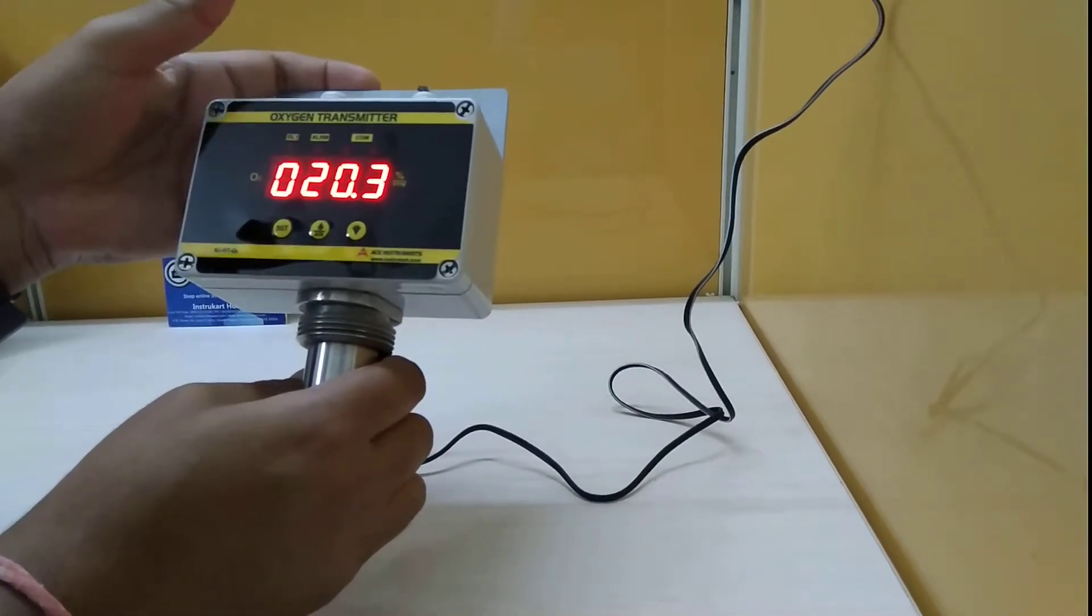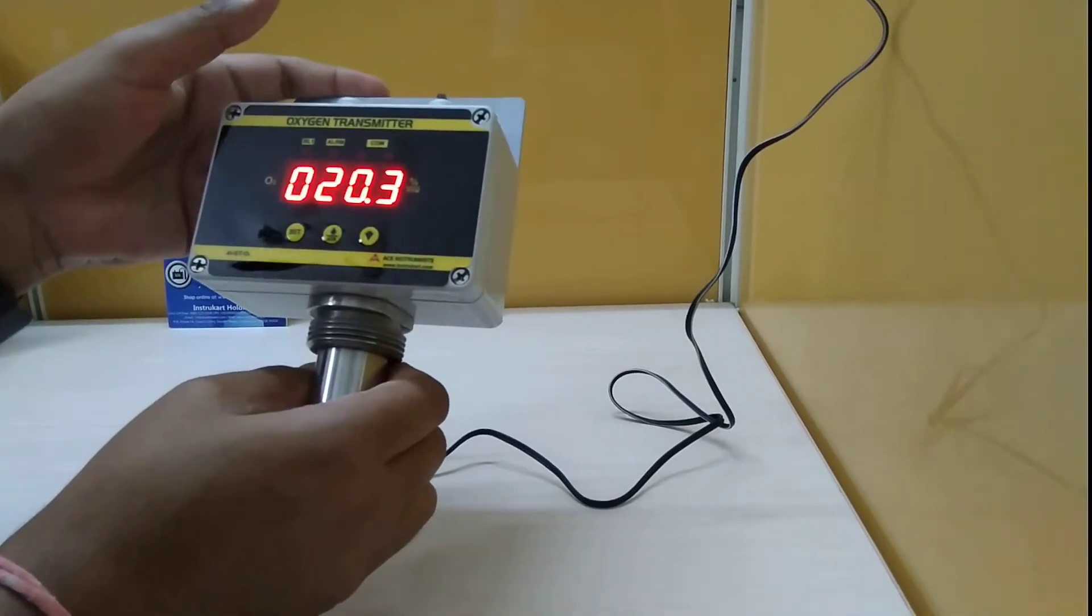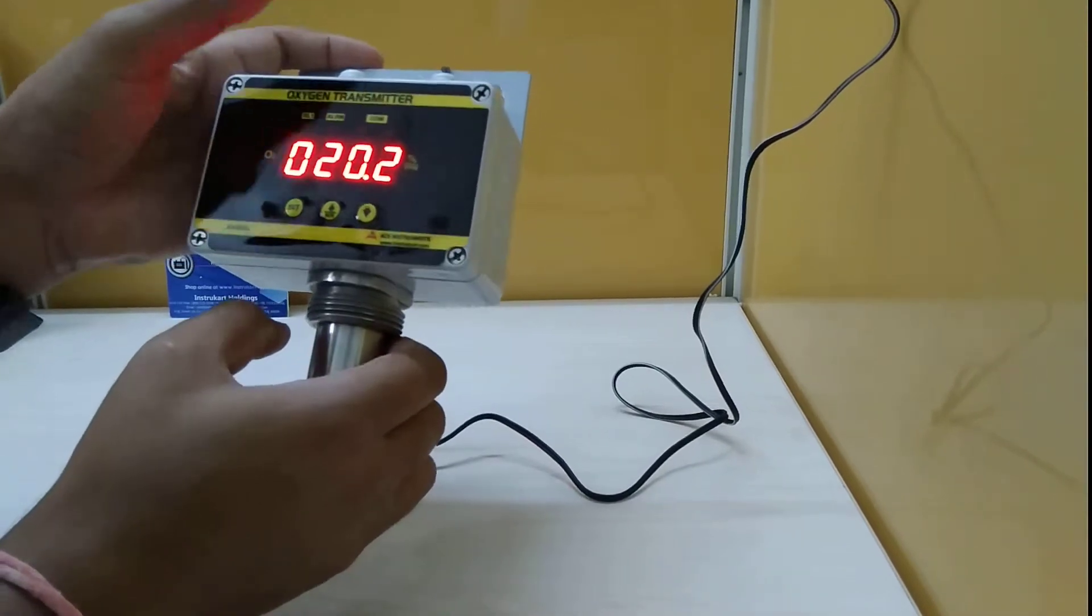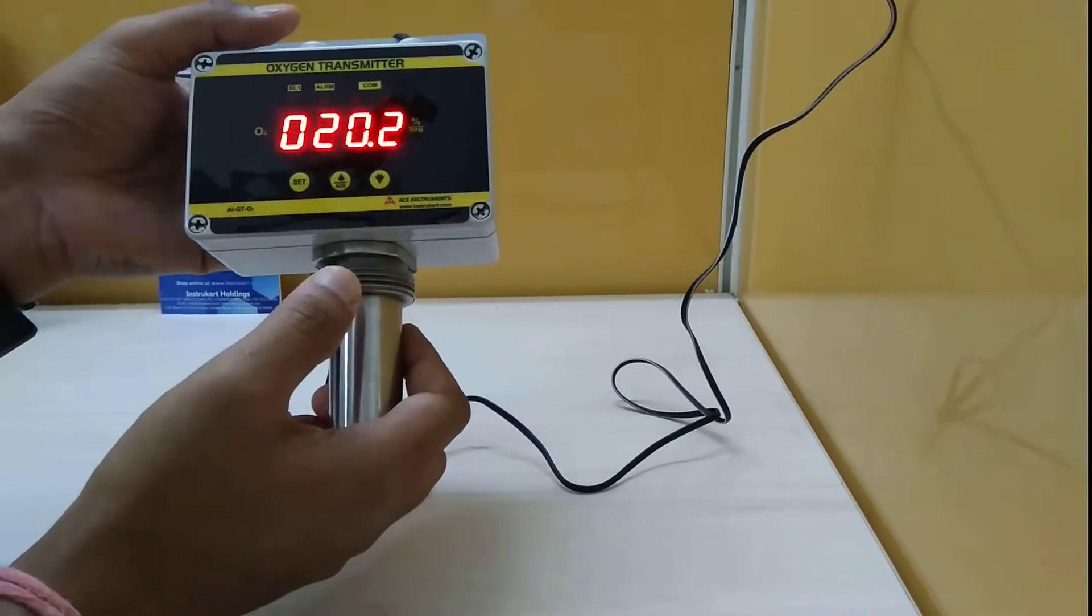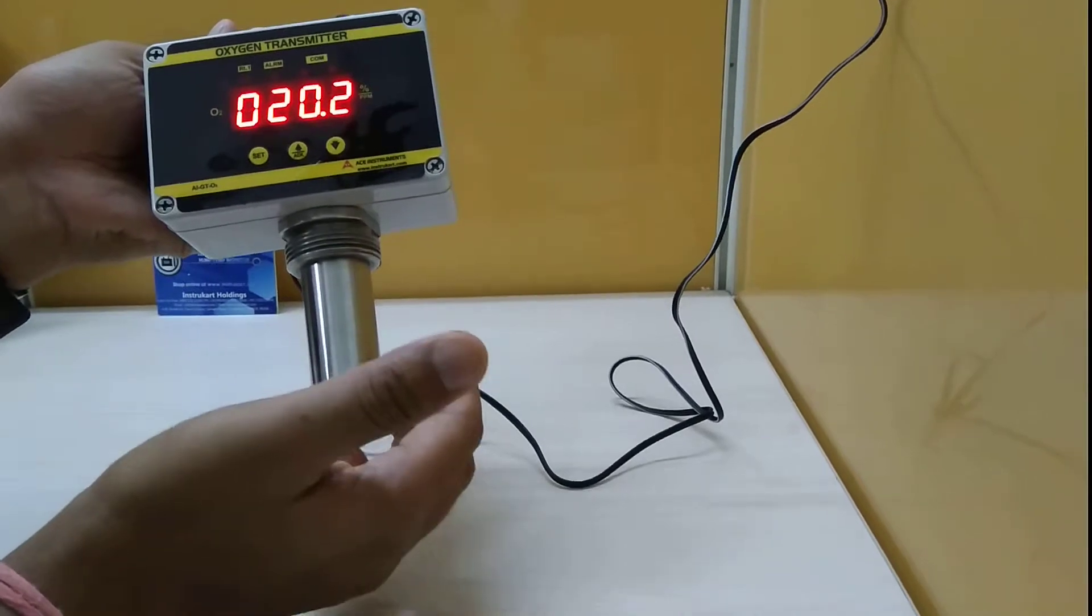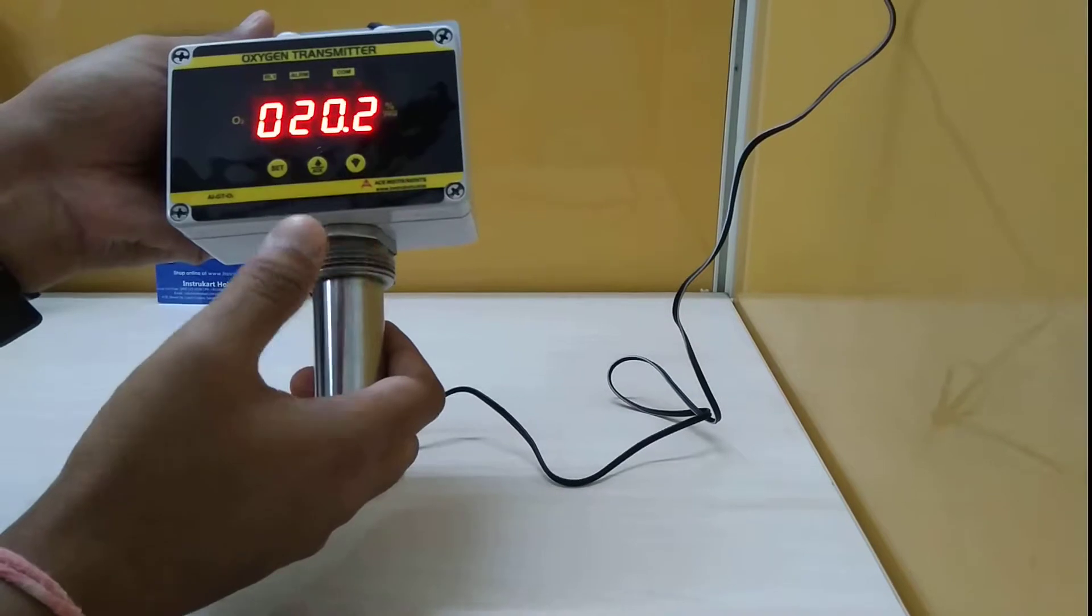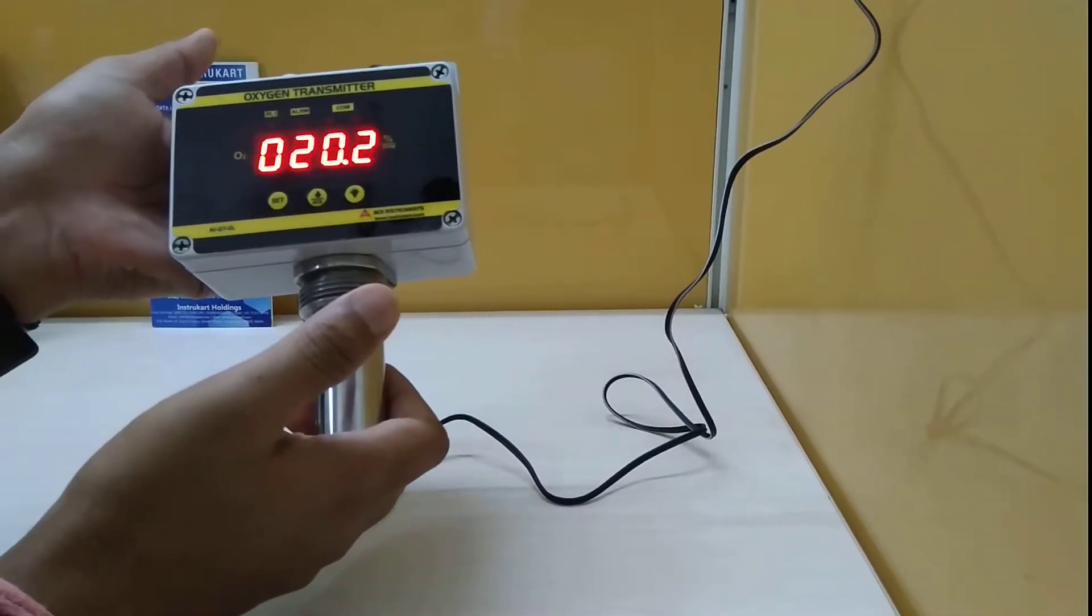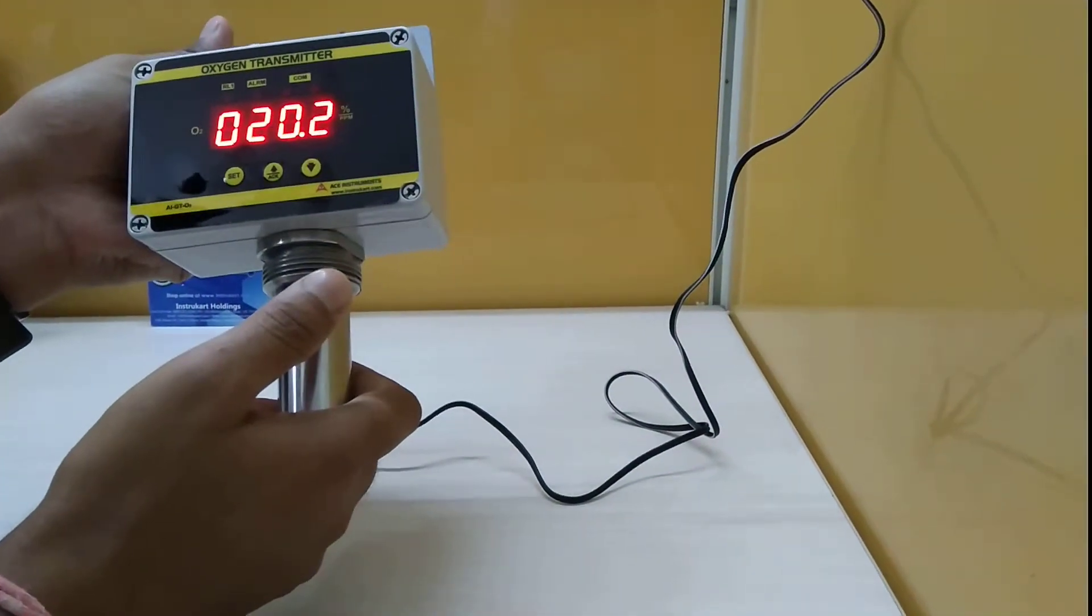It has a relay output which is normally open/normally closed, and features a three or four digit seven-segment LED display showing readings in percentage volume. Currently we can see it's reading 20.2%, and the ambient oxygen level is approximately 20.9%, which is correct for breathing at altitudes near mean sea level.